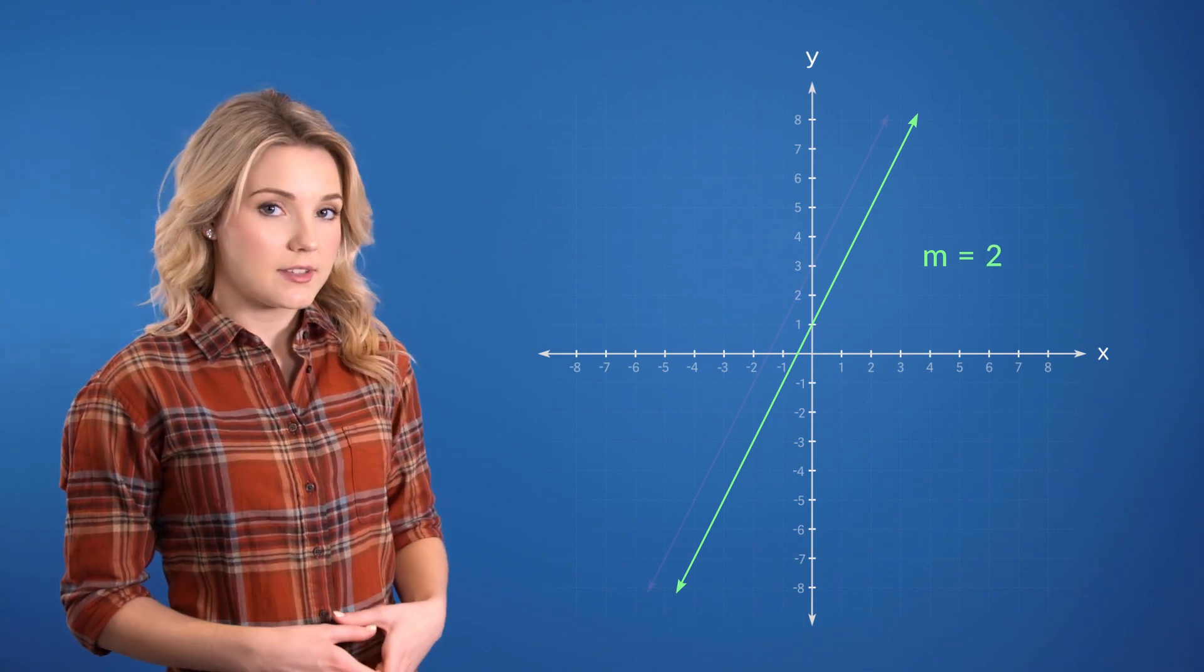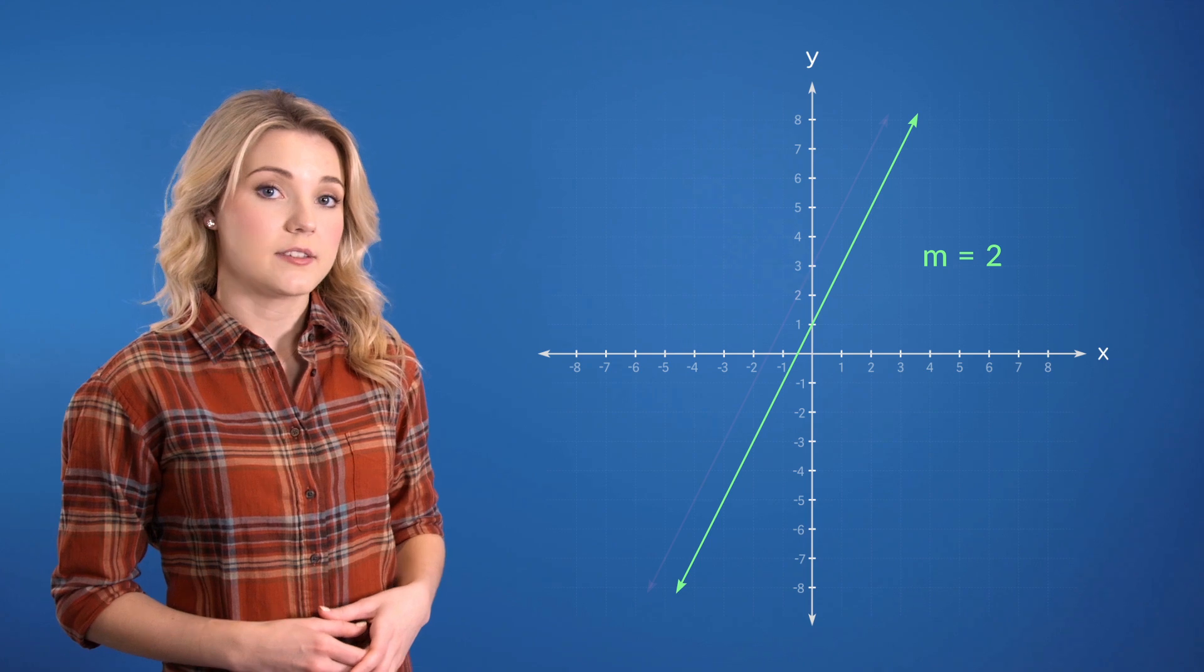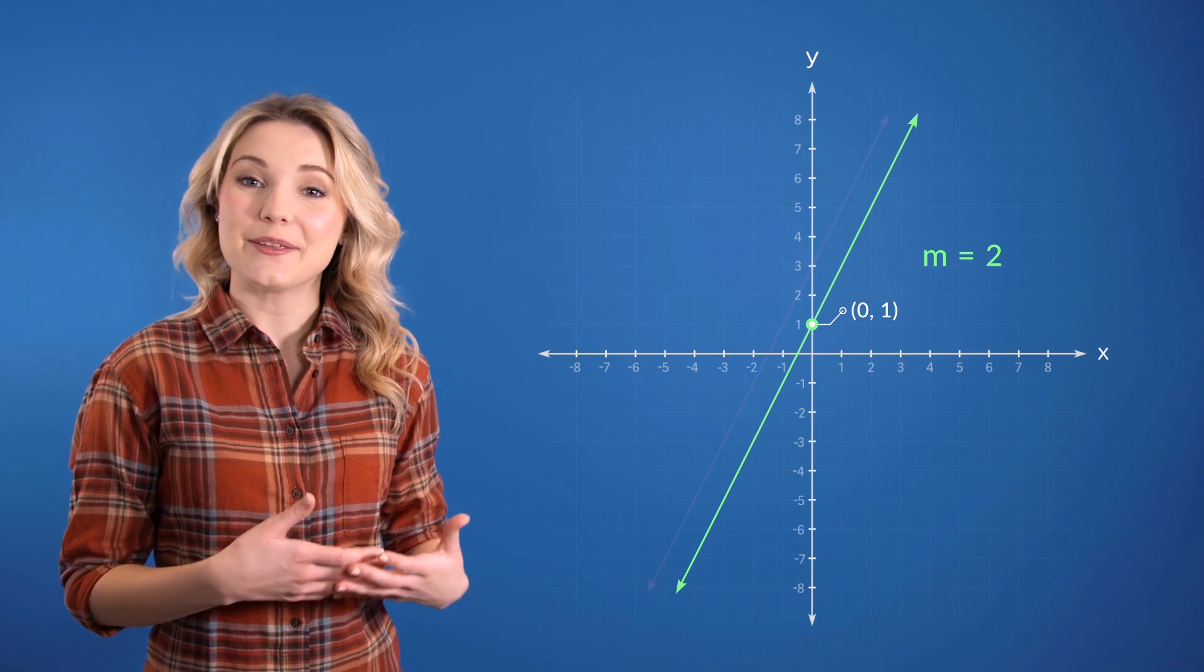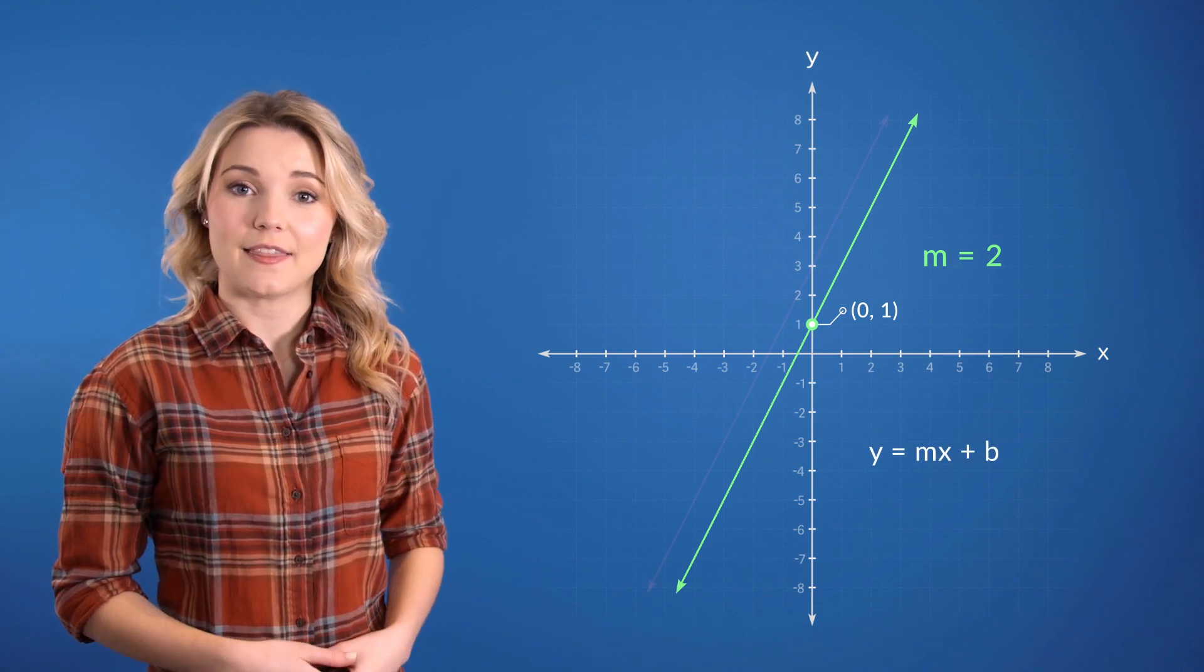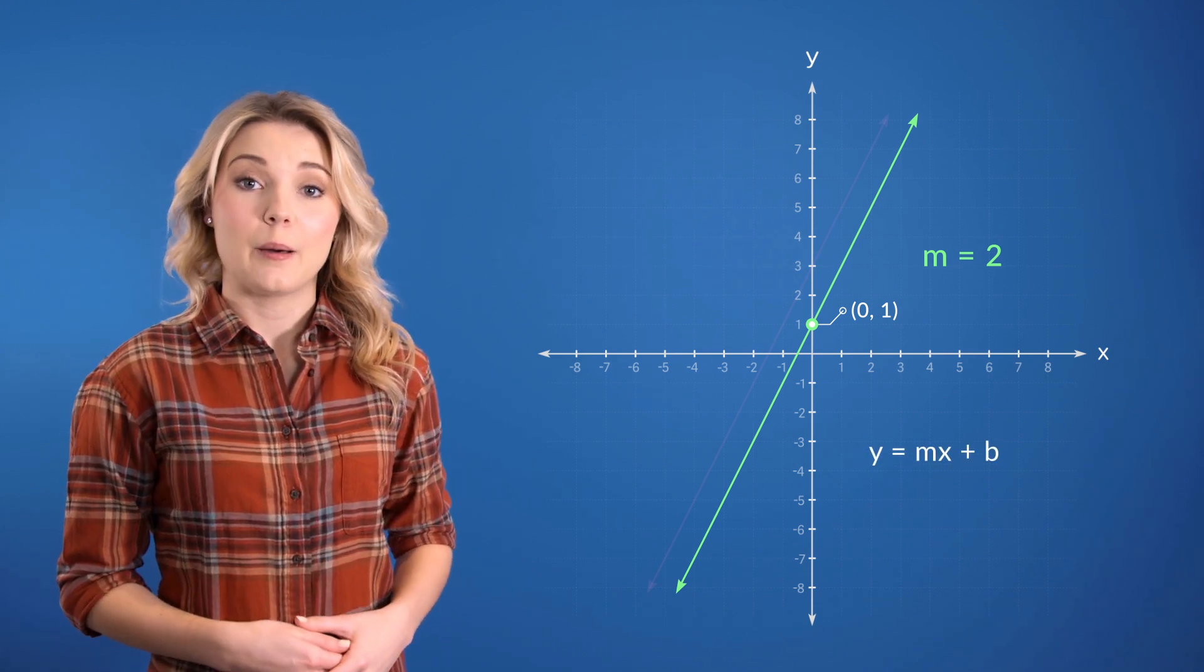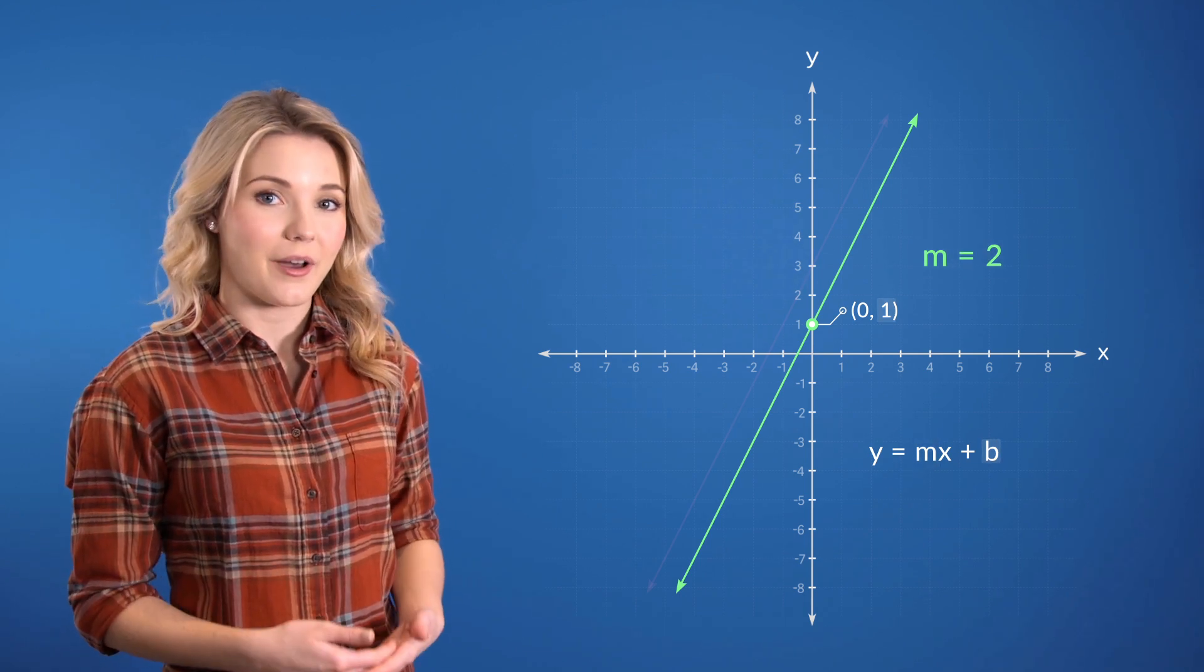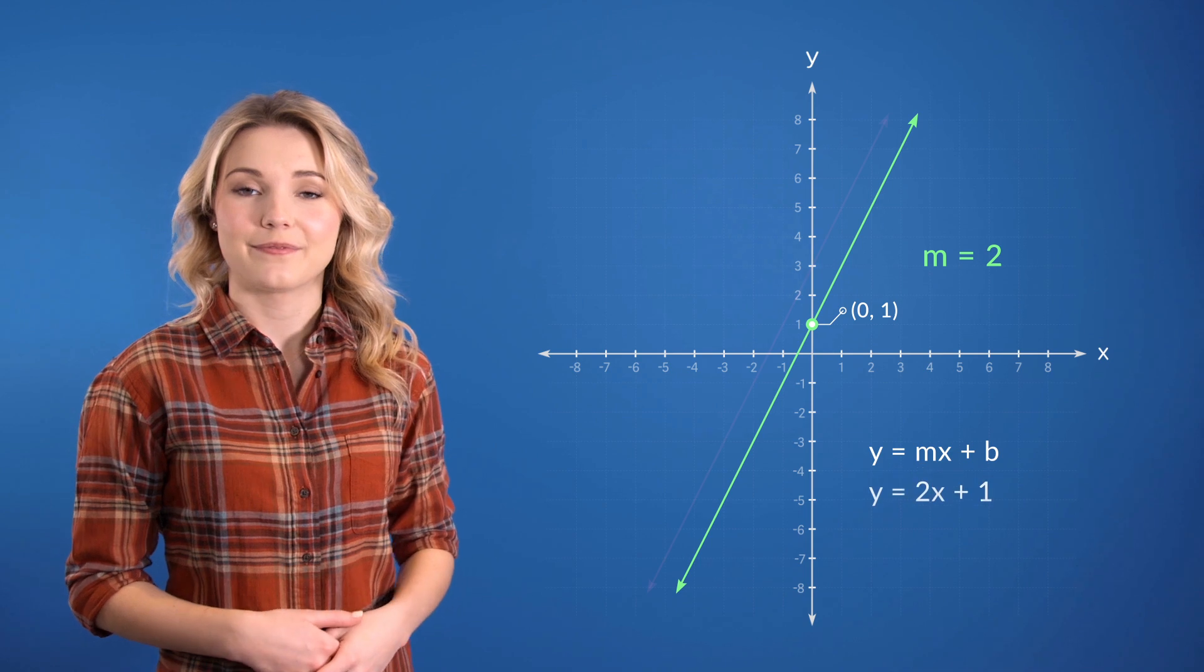And as you can see, the y-intercept sits at (0, 1) for this line. Aha! So we can use the slope-intercept form to get the equation of this line by plugging in the slope and y-value of the intercept to get the following.